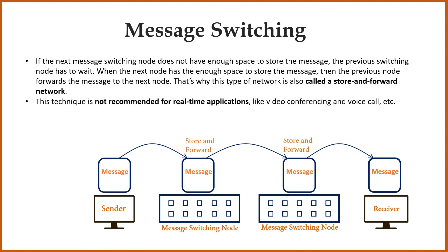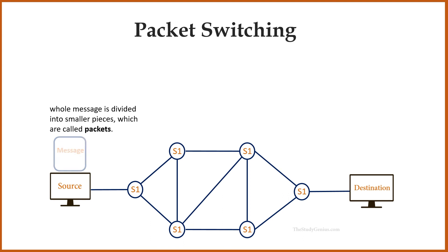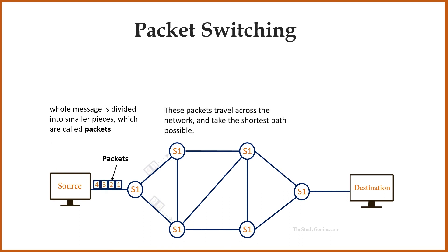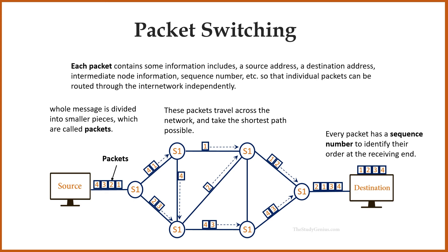This technique is not recommended for real-time applications like video conferencing and voice calls. Now let's discuss packet switching. In packet switching, the whole message is divided into smaller pieces called packets. These packets travel across the network and take the shortest path possible. Every packet has a sequence number to identify their order at the receiving end. Each packet contains information including a source address, a destination address, intermediate node information, sequence number, etc., so that individual packets can be routed through the network independently.